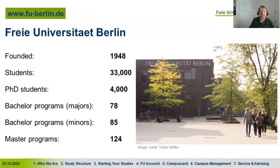Some words on the university: we are about 70 to 72 years old and have roughly 33,000 students, among them 4,000 PhD students. Those students study mainly in bachelor and master programs, of which we have more than 200 if we take everything together.